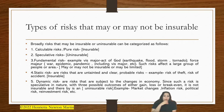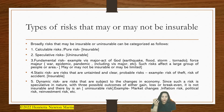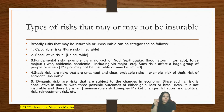Now, what are the types of risks that may or may not be insurable? Broadly, they can be categorized as follows: calculable risk — that is, pure risk, which is insurable; speculative risk, which is uninsurable; fundamental risk — for example, vis major/act of God such as earthquake, flood, storm, tornado; and force majeure, such as war, epidemic, or pandemic. Such risks affect a large group of people or area and may or may not be insurable, or may be limited.